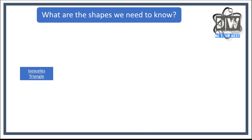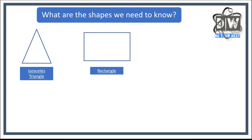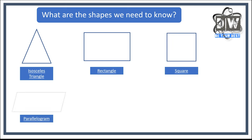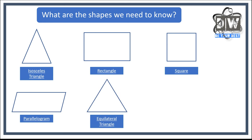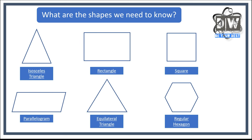What are the shapes we need to know for our tests and exams? Please copy these out. We've got an isosceles triangle — two sides the same length, one side different, with equal base angles. We need to know a rectangle, a square, a parallelogram, an equilateral triangle — all sides the same length, all angles the same — and a regular hexagon. Regular means all sides are the same length.